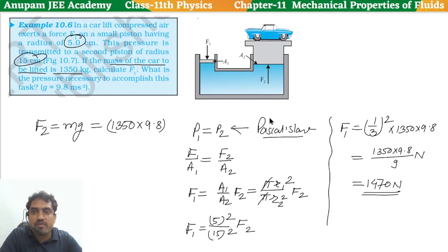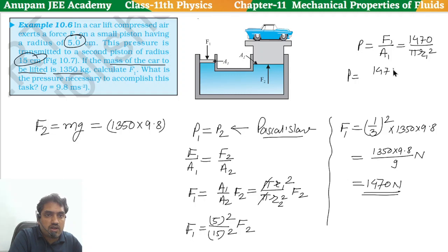What is part B? The pressure equals force upon area. Force here is F1, area is A1. Force here is 1470, and the area is pi r1 squared. We need to convert it to meters. So 1470 divided by pi, that is 3.14, and the radius is 5 into 10 to power minus 2 whole squared. Here we change the color so we don't mix it.